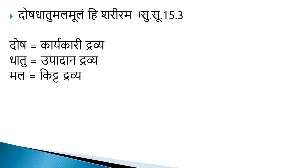Dosh is considered as a Kriyakari Dravya of the body — it is a functional biological entity. Dhatu is considered as Upadhan Dravya, which bears, supports, and nourishes the body — it is the constructive unit of our body. Mal is considered as Kitta Dravya or Ahar Mal, which is produced in our body as an unwanted waste product.